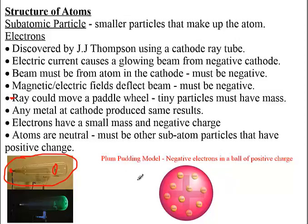When Thompson was all done, our idea of the atom looked like this. They called it the plum pudding model — you can think of it as more of a blueberry muffin model — where you just had this positiveness with some electrons stuck in there.